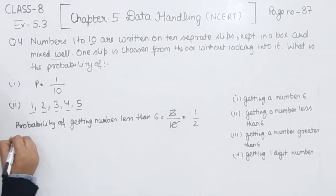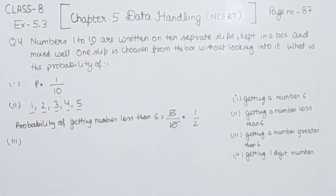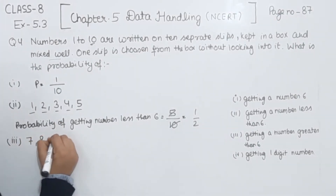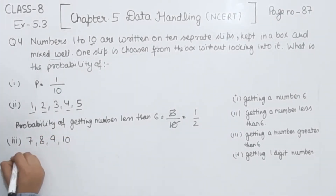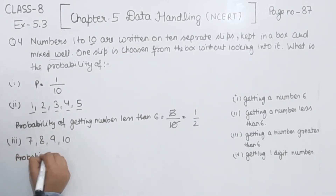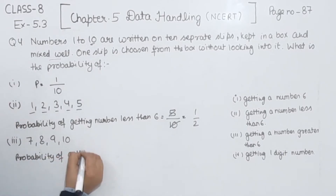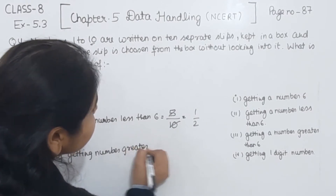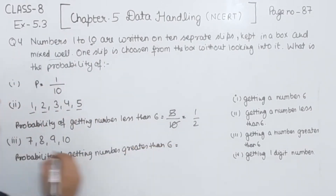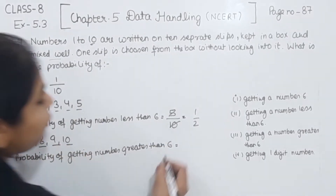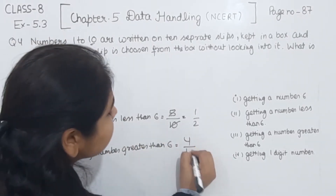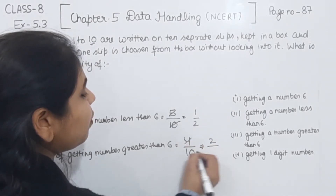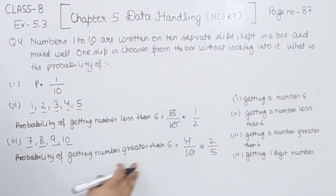Now comes to part 3. In part 3, we have to find getting a number greater than 6. So the numbers greater than 6 will be 7, 8, 9, and 10. So we have to find the probability of getting a number greater than 6. The favourable outcomes we have are 1, 2, 3, and 4, and the total outcomes we have 10. Now simplifying: 2 twos are 4 and 2 fives are 10, so the probability of getting a number greater than 6 will be 2 by 5.